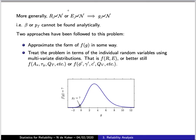This highlights a more general problem in reliability analysis: our descriptions of the loads and of the resistance are generally not normally distributed. As a consequence, the performance function is also not normally distributed. So the fairly simple analysis where we were able to determine the reliability index analytically in terms of the parameters of the resistance and loading cannot be performed, and we cannot find the reliability index analytically.